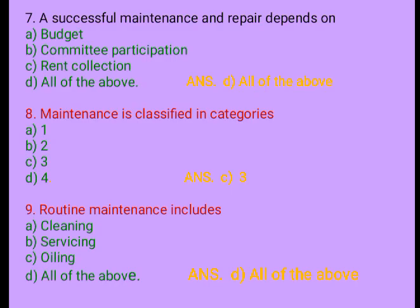Question 7. A successful maintenance and repair depends on: A. Budget, B. Committed participation, C. Rent collection, D. All of the above. Answer: D. All of the above. Question 8. Maintenance is classified into how many categories? A. One, B. Two, C. Three, D. Four. Answer: C. Three.